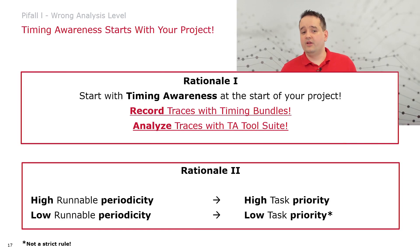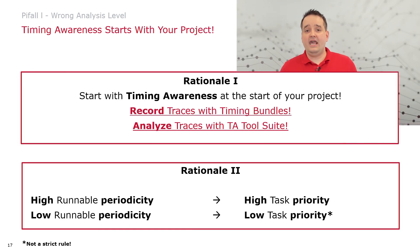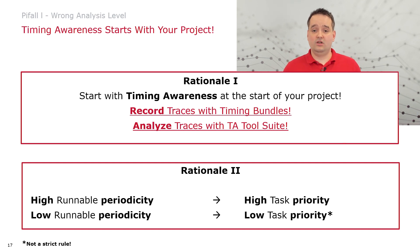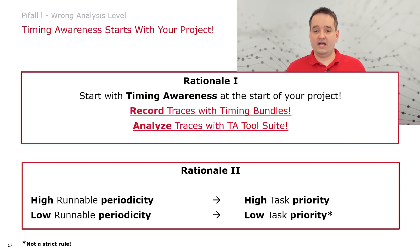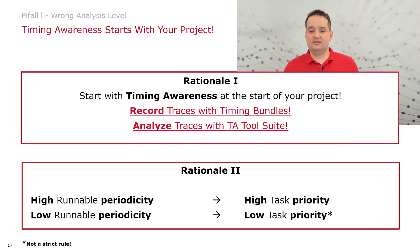It's rather difficult to argue why you need another task based on a strict timeline close to SOP. What we can learn from this: at the very start of your project, your timing awareness should also start. Record traces — you can use the Vector timing bundles to acquire traces and the analysis can be performed with, for example, the Timing Architects tool suite.